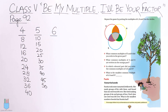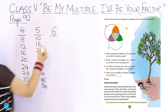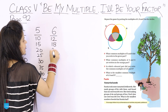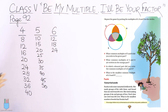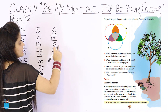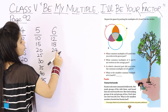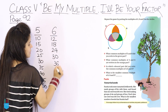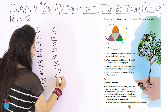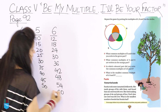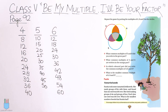Now for 6, I am writing the table only. 6 ones are 6, 6 twos are 12, 6 threes are 18, 6 fours are 24, 6 fives are 30, then 36, 42, 48, 54 and then 60.